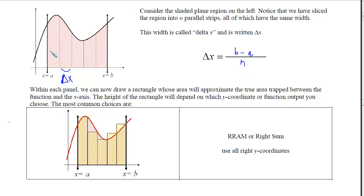Within each panel, we draw a rectangle whose area approximates the true area trapped between the function and the x-axis. The height of the rectangle depends on which y-coordinate or function output you choose. We have five different choices. Our first is RRAM, or the right sum — it takes the right edge of any interval, and that output becomes the height of the rectangle used for that interval.